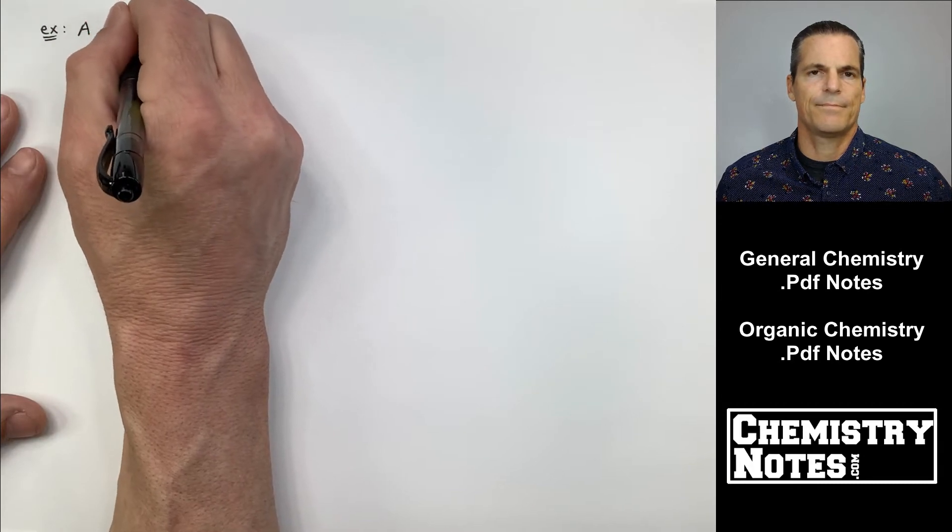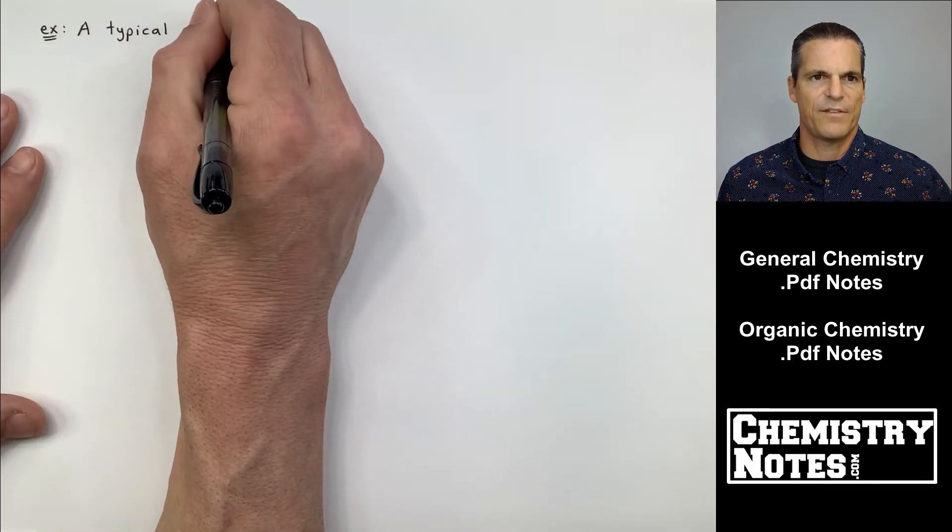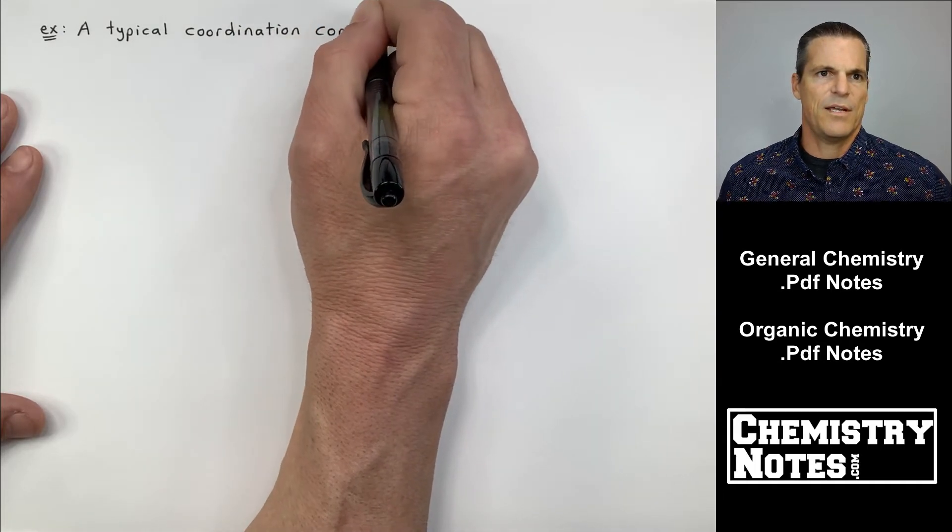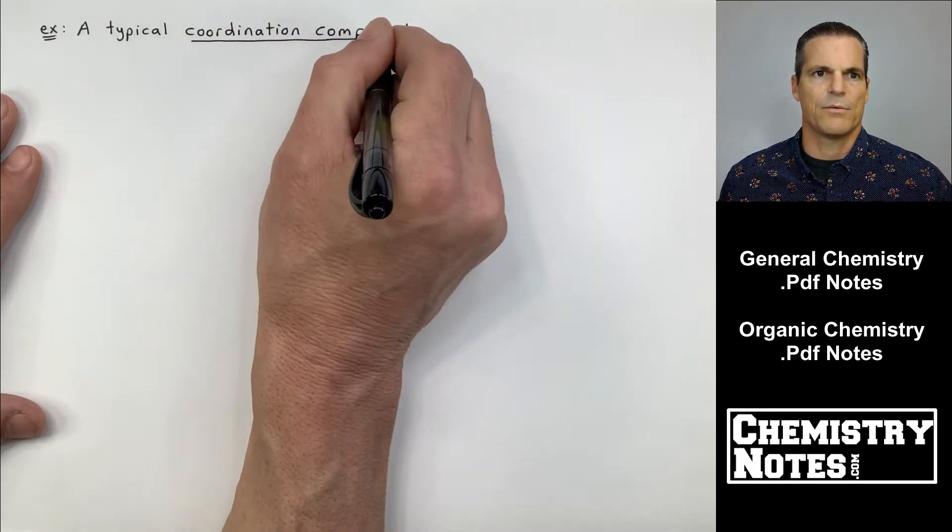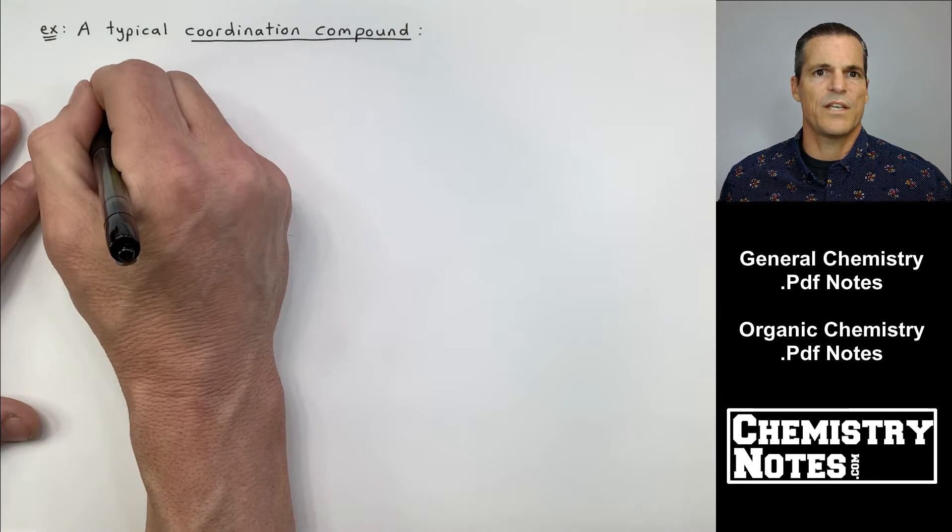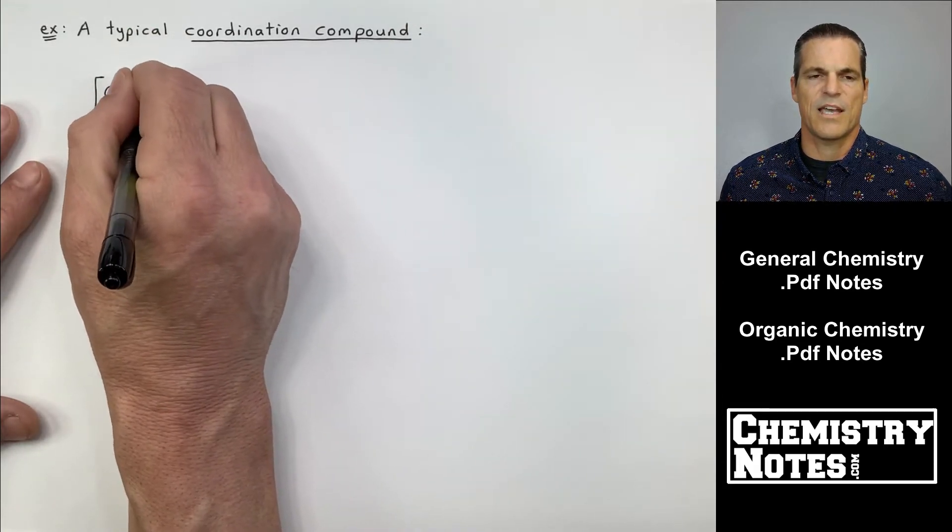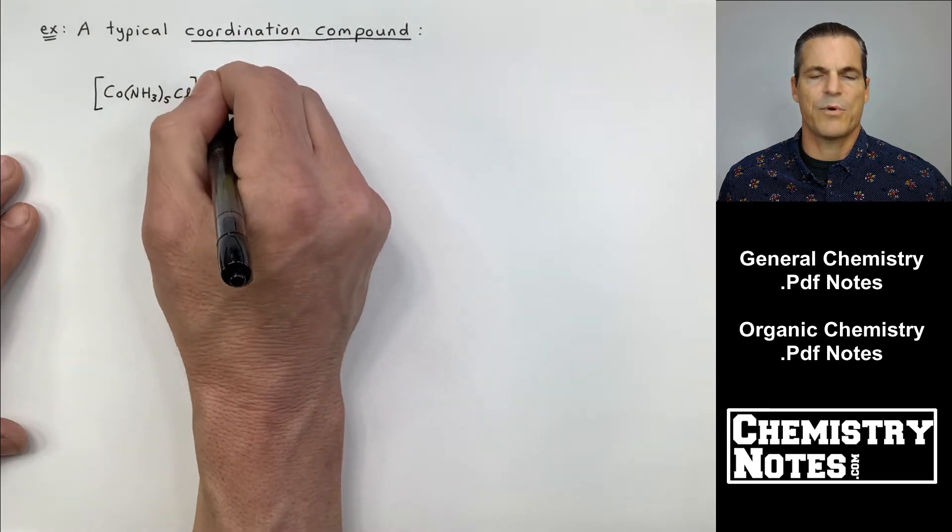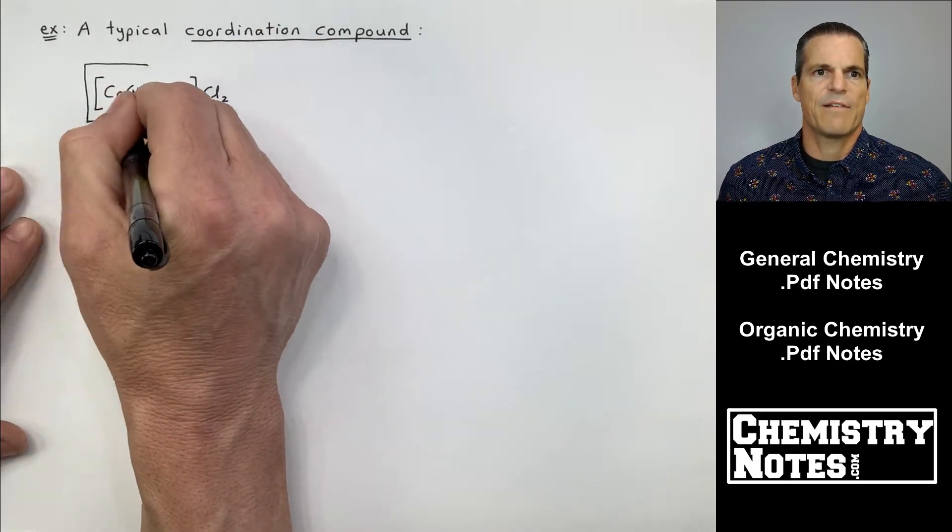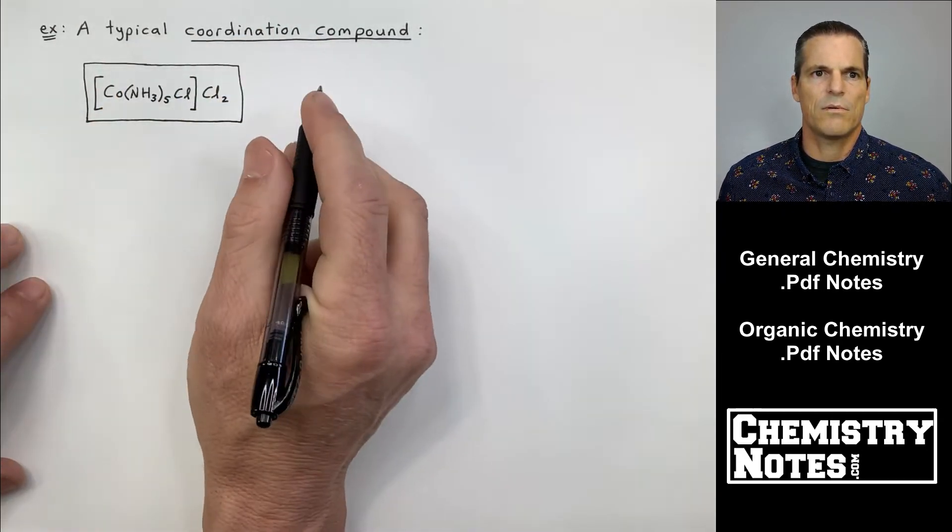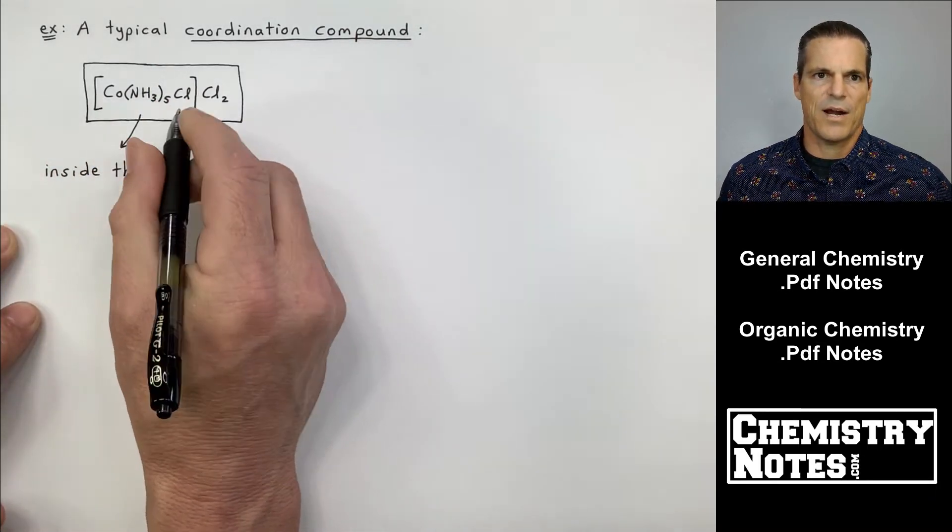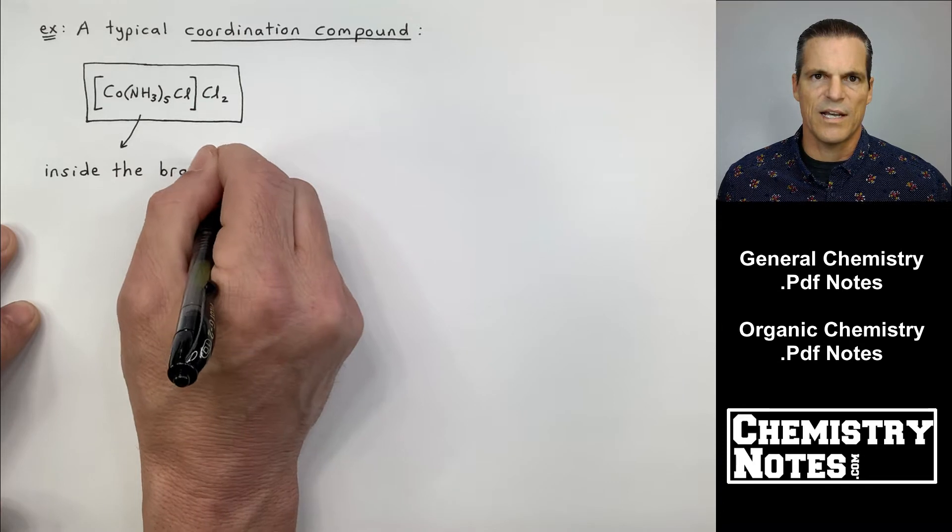All right. Let's do an example. Best way to learn new stuff is to do examples. We do plenty of examples in our notes. Here is an example at the top of page two, a typical coordination compound. So this is going to be a sketch. You see that I'm using brackets, brackets are very common and I've got bracket Co, NH3, 5, Cl, end bracket. And then I've got Cl2 on the outside.